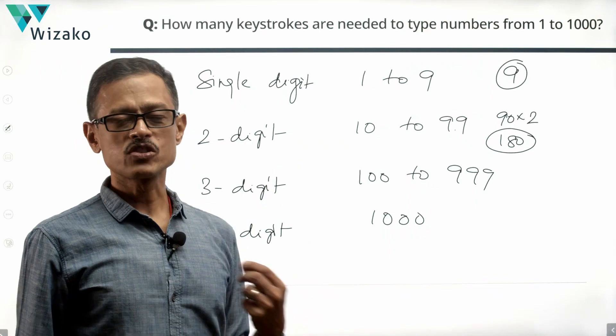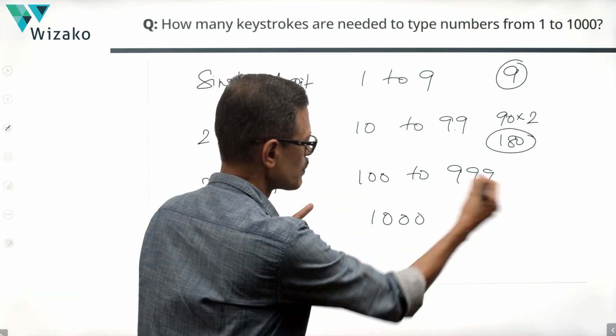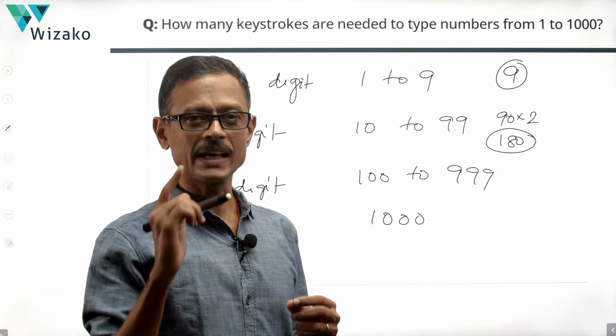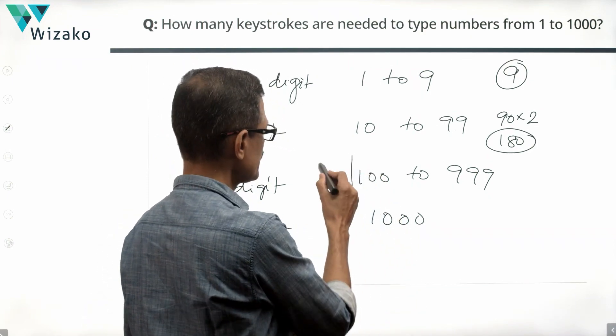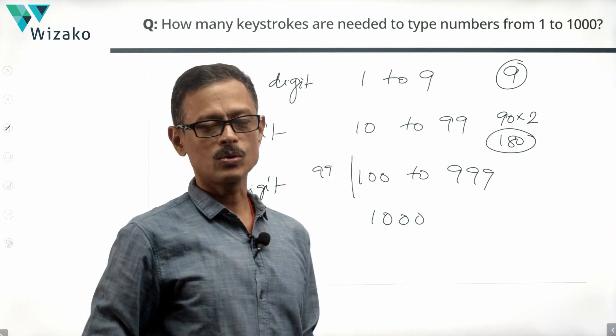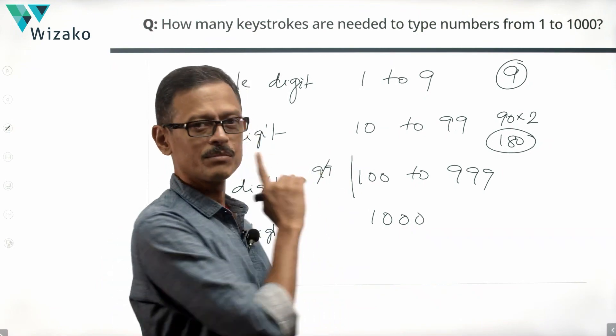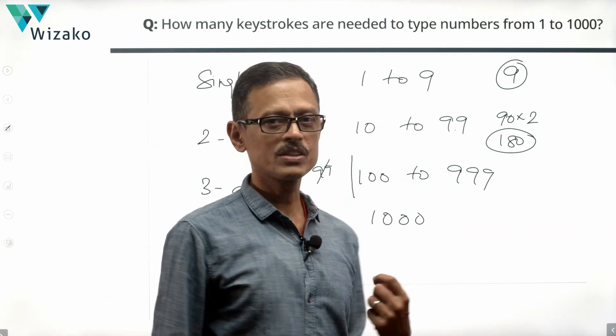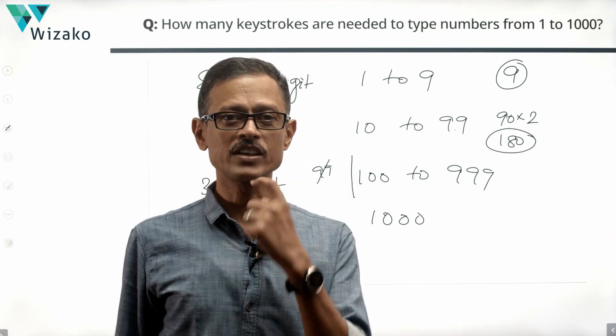Run through the same process for three digit numbers. In the first 999 numbers, 1 to 999, what are we not counting? The first 99 numbers are not counted. These are either single digit numbers or two digit numbers. So how many numbers do we have then? 900 numbers. It's not 899.